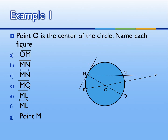Point O is the center of the circle, so we name it circle O, and it wants us to name each figure. For part A, segment OM goes from the center to the edge — this would be a radius. For part B, segment MN stops on the edges, so it would make this a chord.